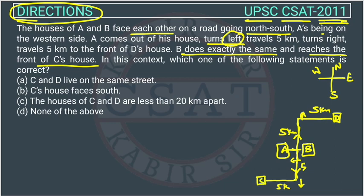In this context, which one of the following statements is correct? We have to check all the statements. Statement: C and D live on the same street — no, they are not on the same street, so this is wrong. Statement: C's house faces south — C's house actually faces east, so this is also wrong.